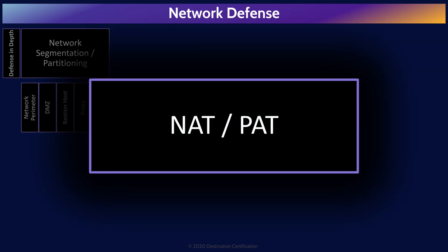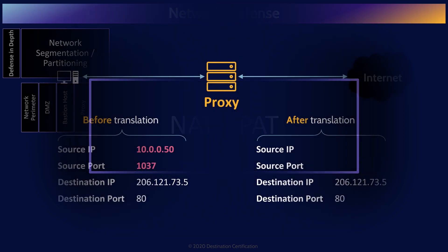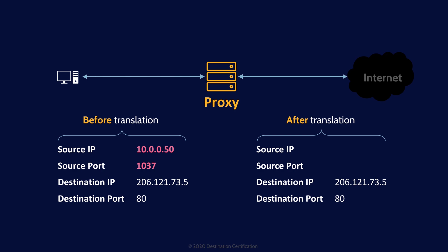NAT, Network Address Translation, is a method of remapping — swapping an IP address to another by modifying the IP header of packets when they pass through a proxy. Typically remapping an internal, unroutable private IP address to a publicly routable address when a packet passes from inside the network out onto the internet. The proxy should also remap any returning responses, changing the destination IP address from the proxy's IP back to the internal system's IP address. PAT, port address translation, is exactly the same idea except instead of changing the IP address, the port number is remapped.